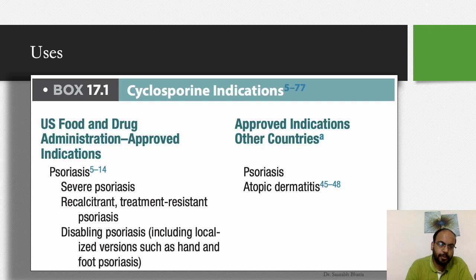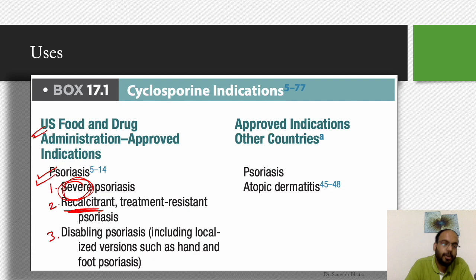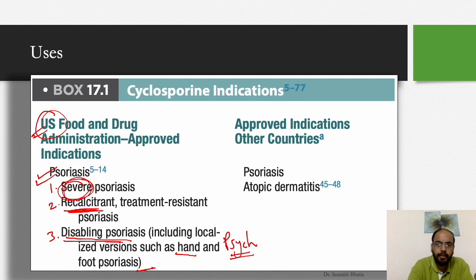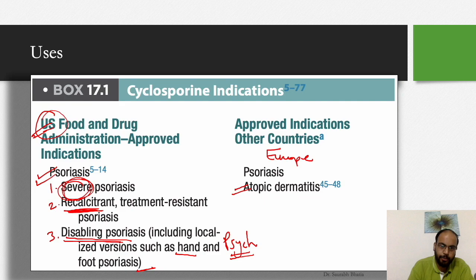The FDA has approved cyclosporine for psoriasis under three indications: severe psoriasis, psoriasis recalcitrant to other therapies, or extensively disabling psoriasis — such as hand and foot psoriasis not allowing the patient to work, or causing psychosocial disability. In other countries, particularly Europe, it has also been approved for atopic dermatitis in severe cases not responding to other therapies, to manage acute flare-ups.